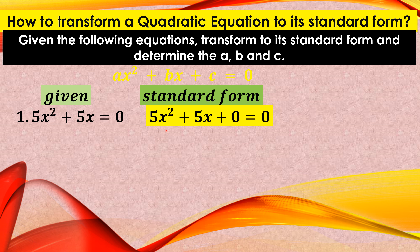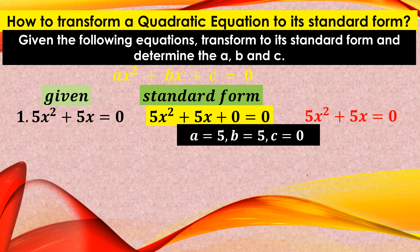If your teacher requires the presence of all three terms — quadratic, linear, and constant — you write it in that manner. But it's essentially the same thing, since the 0 constant is insignificant. So we can finalize it as 5X squared plus 5X plus 0 equals 0, where A is 5, B is 5, and C is 0.